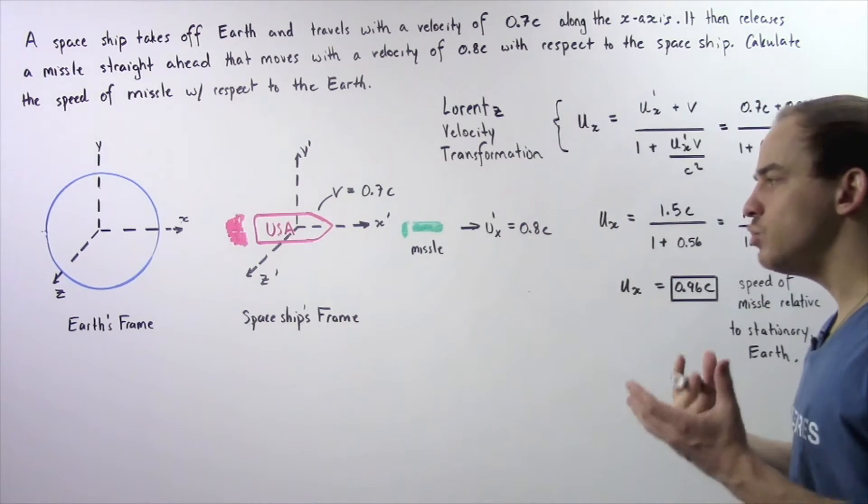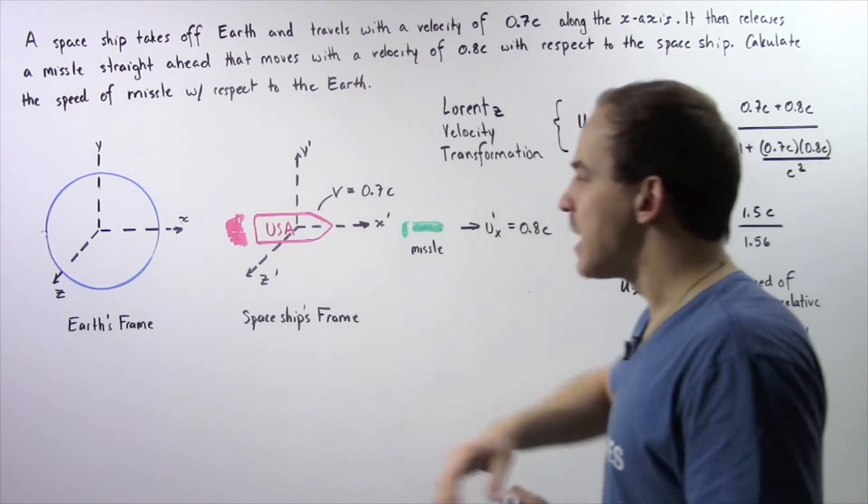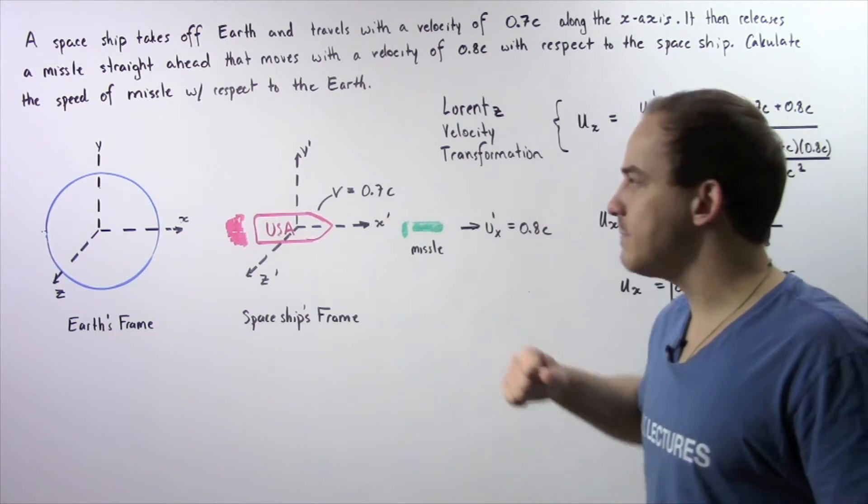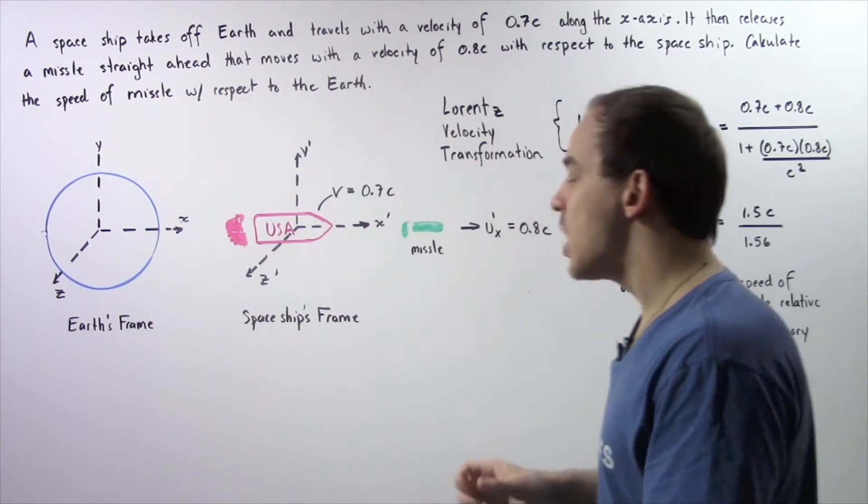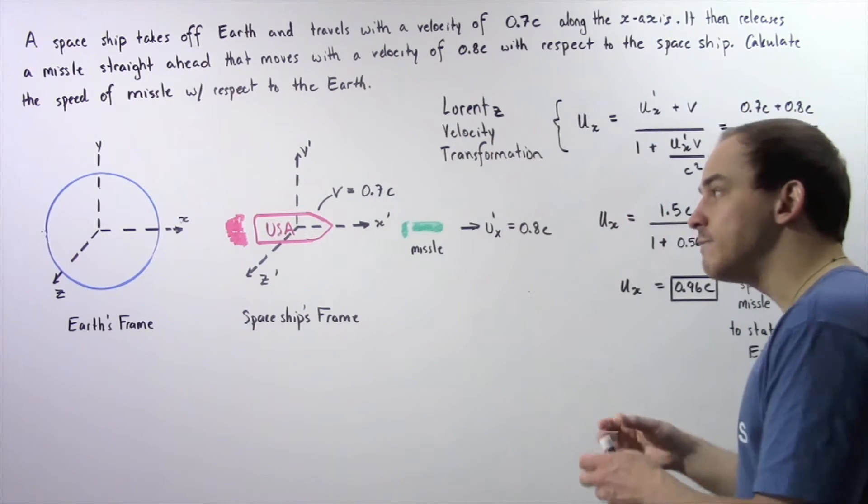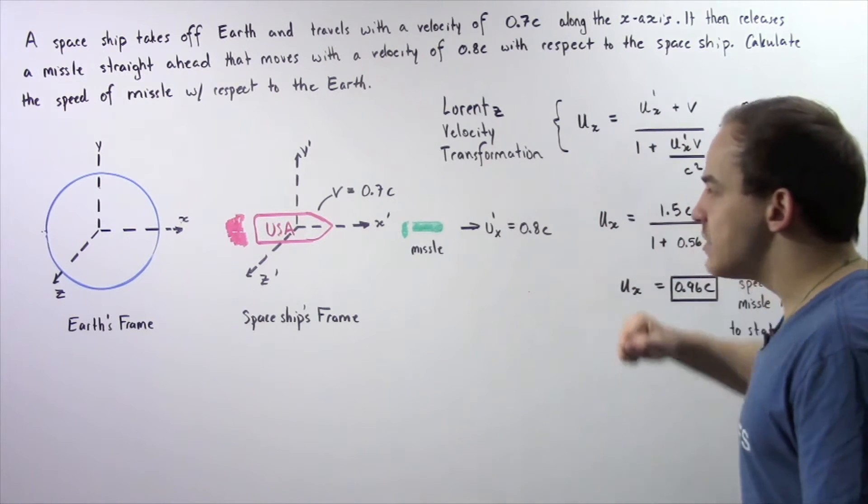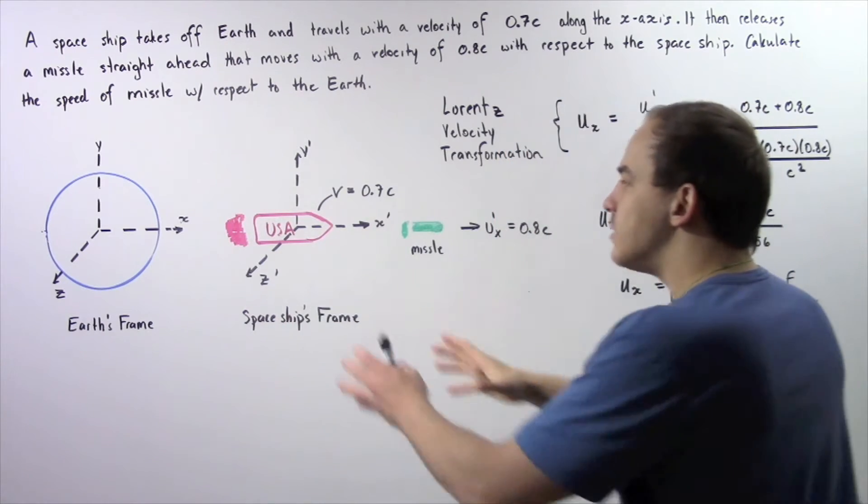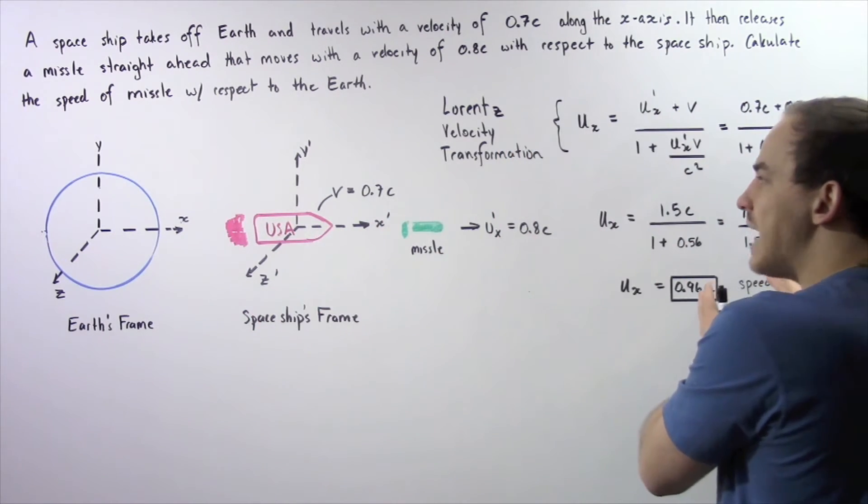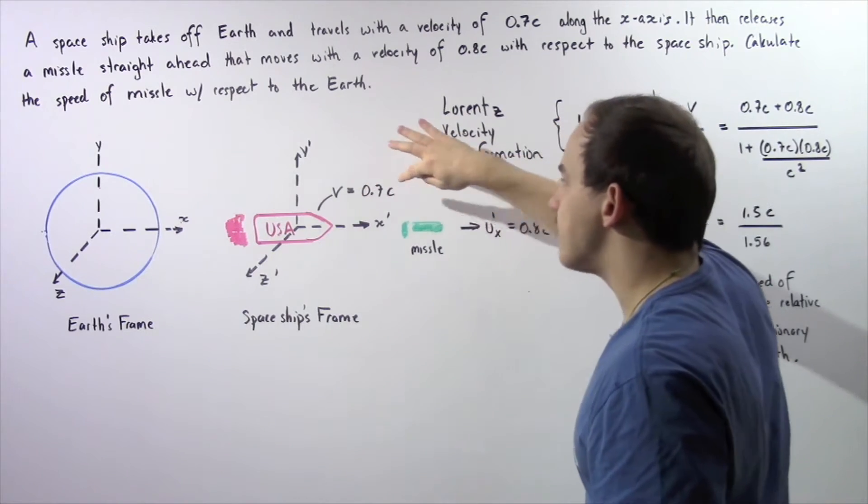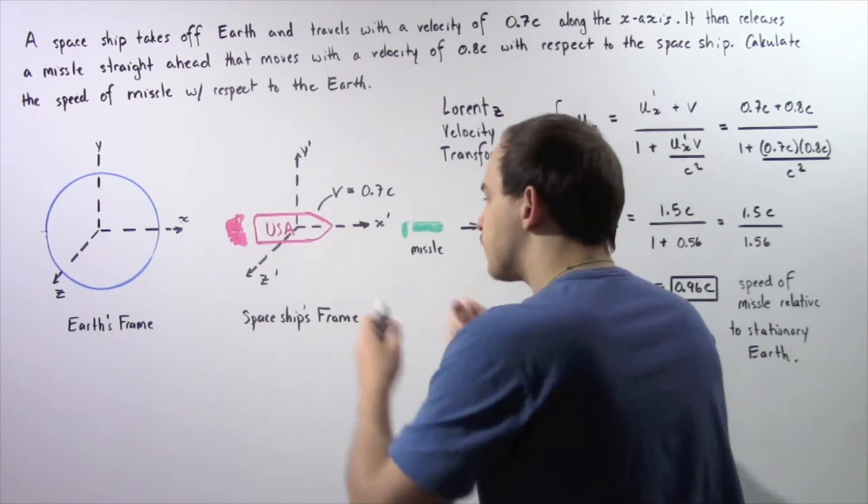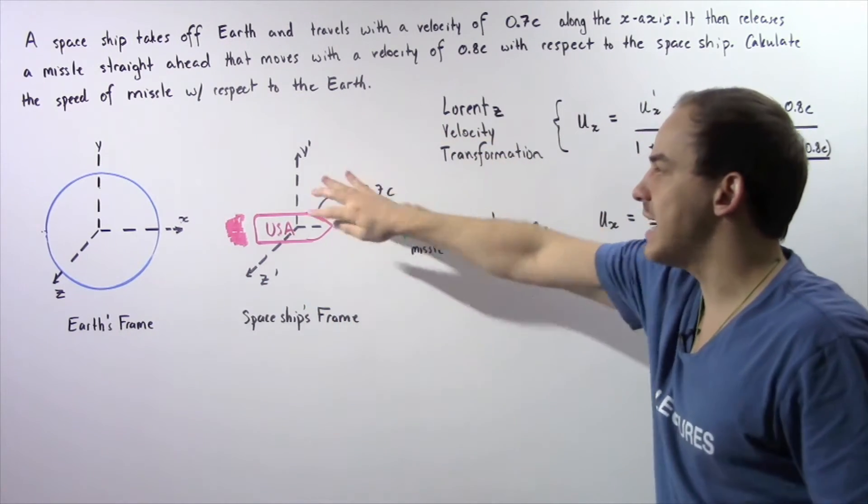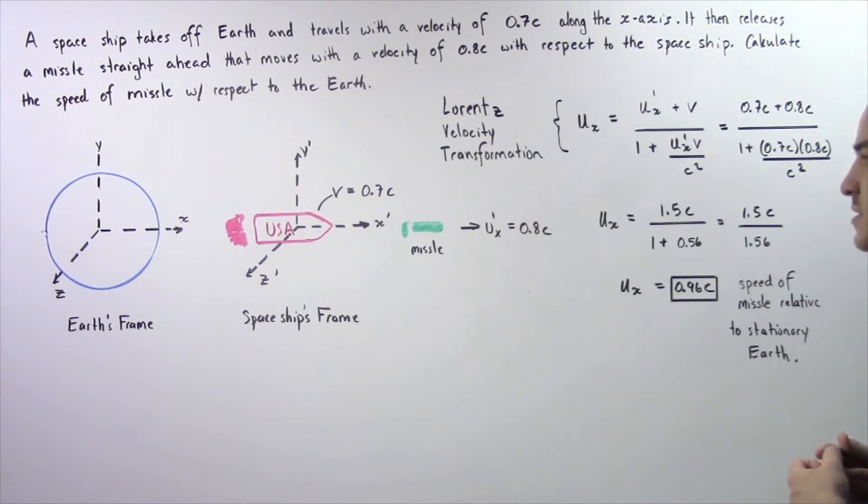We have two different reference frames. The Earth is the stationary inertial reference frame with x, y, and z axes. The spaceship itself is its own inertial reference frame given by axes x prime, y prime, and z prime. The spaceship is moving to the right with a velocity of 0.7c, so this reference frame is moving away from the Earth with the same velocity as the spaceship.